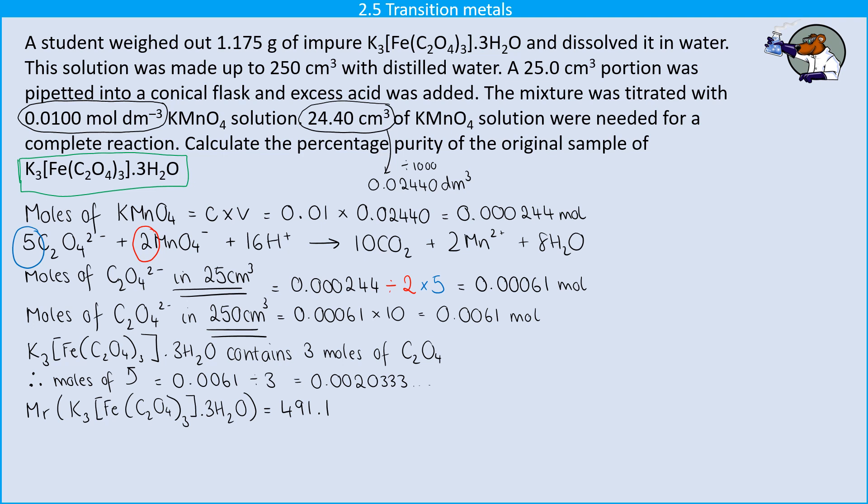I can calculate the relative formula mass of that compound. Again, this is something where in a slightly shorter question, you might be expected to do it for yourself. In one like this that is quite so extended, they might give it to you just so that there's one fewer marking point to include in there. But at any rate, it's 491.1 grams per mole. And so now I can break out masses, Mr. Mole, and multiply that by my number of moles to get an overall mass of 0.99857 grams.